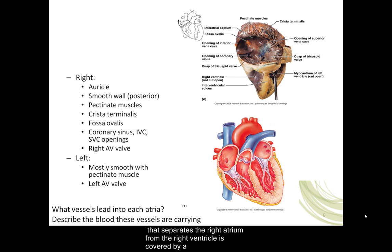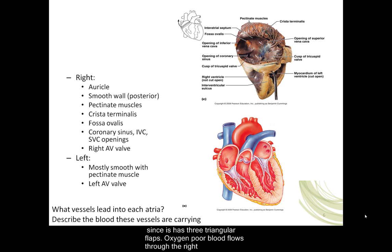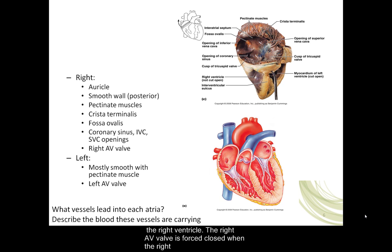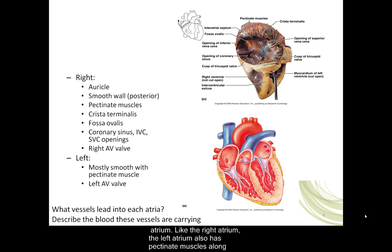The opening that separates the right atrium from the right ventricle is covered by a valve called the right atrioventricular valve, also called the tricuspid valve since it has three triangular flaps. Oxygen-poor blood flows through the right atrium through the right atrioventricular opening when the valve is open and into the right ventricle. The right AV valve is forced closed when the right ventricle begins to contract, preventing blood from back flowing into the right atrium.